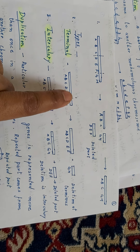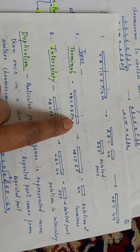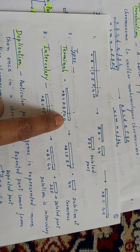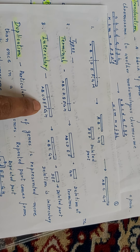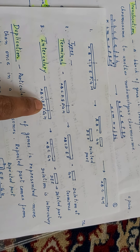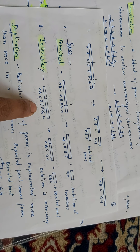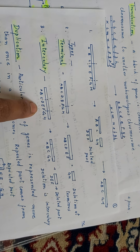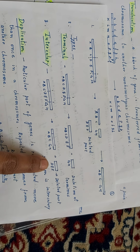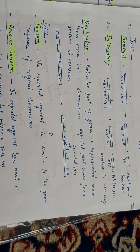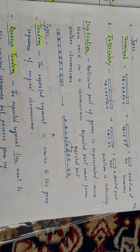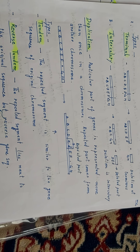If deletion occurs from the terminal part, it is known as terminal deletion. When deletion occurs from the terminus part, G and H will be removed, leaving A, B, C, D, E, F — deletion at terminus. Next is intercalary deletion: when deletion occurs from the middle part of the chromosome, it is called intercalary deletion. The deleted part is D, E, F.